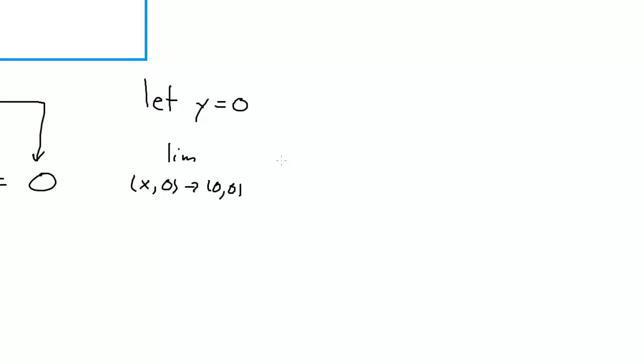So we'll get x to the fourth, zero to the fourth, all of this over x squared plus zero to the fourth quantity cubed. And again, we have the same kind of situation. The denominator is always non-zero, and the numerator is always going to be zero. And so we know the limit is zero along that path.